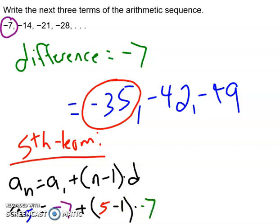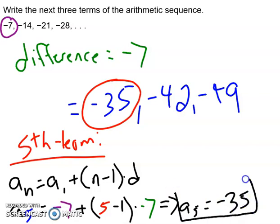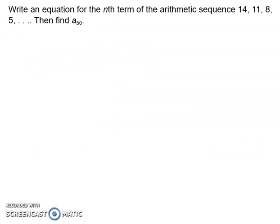So when we do all that, we get a_5 is equal, well, 5 minus 1 is 4. 4 times negative 7 is negative 28. And then negative 28 minus 7 is equal to negative 35. So the fifth term, or a_5, is going to be negative 35. Sweet. Alright. Nice. Let's go on to another one.